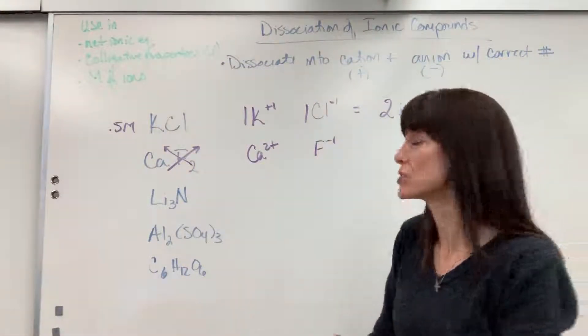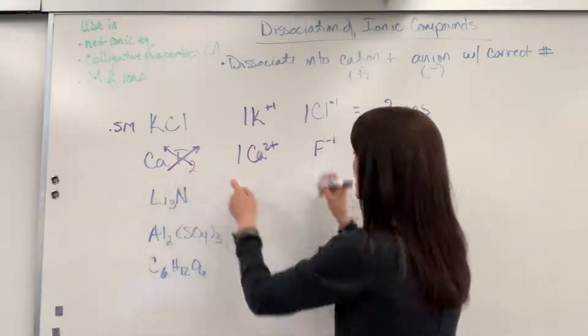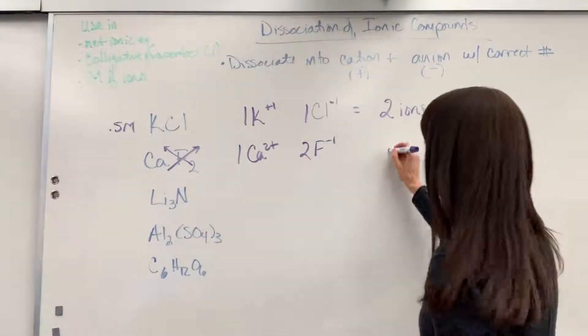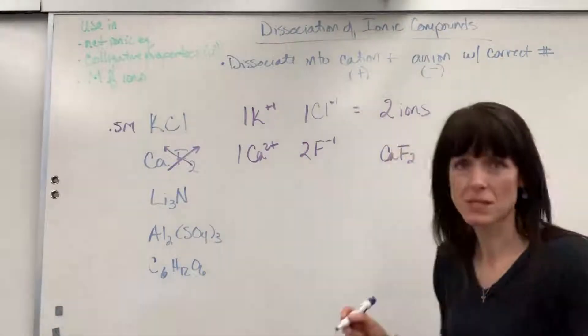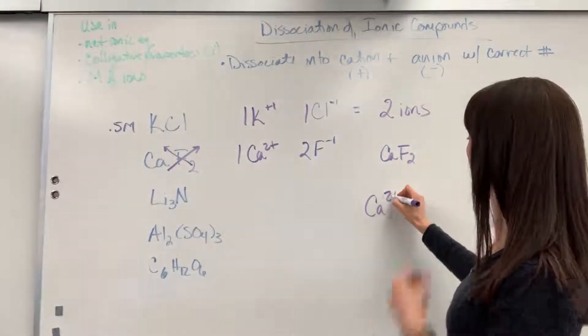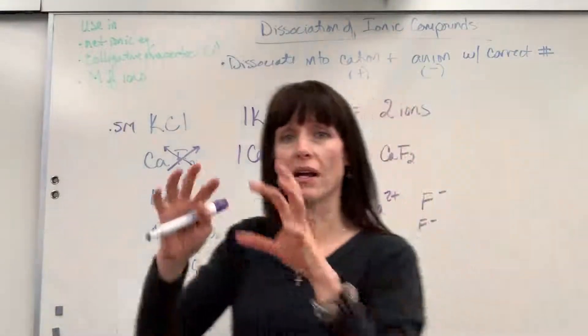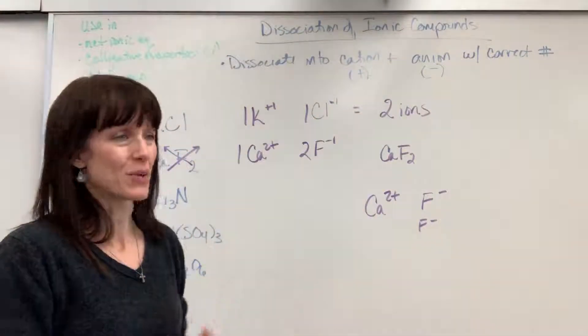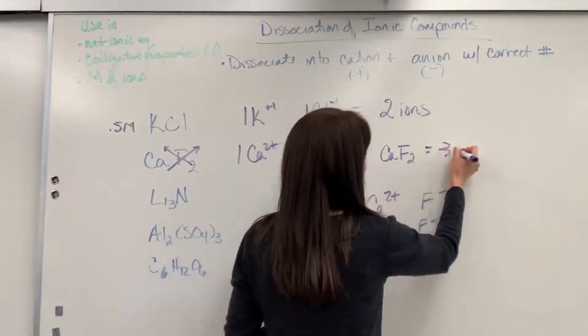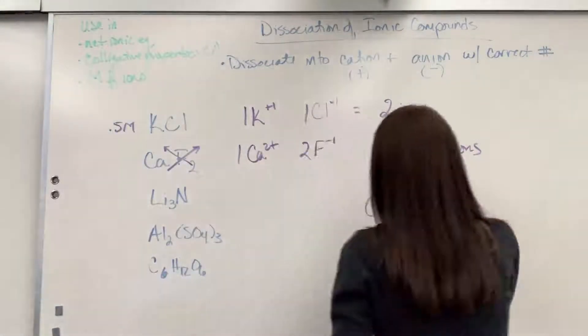Now, how many do I have of each? Well, we've got one calcium and two fluorines. Now, let's take this a step further. I want to draw this in a particulate form. So I drop this in water, and it's going to dissolve. So we'll have the calcium, and then I'll have two fluorides. And those three ions will be floating in the water, surrounded by the water. So this is going to give us a total of three ions, one calcium and two fluorides.